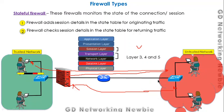Mapping this to the OSI model, stateful firewalls work on Layer 3 (network layer), Layer 4 (transport layer), and Layer 5 (session layer). In addition to IP addresses and port numbers, stateful firewalls also maintain session information in the state table, which corresponds to the session layer — the fifth layer in the OSI model.